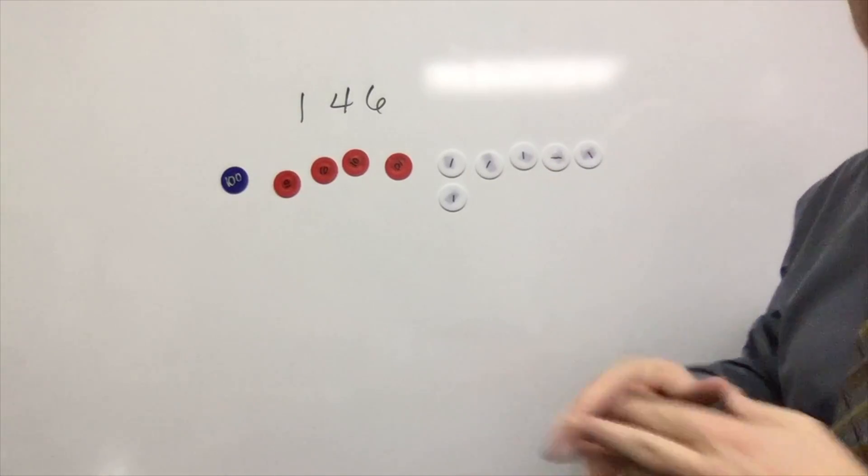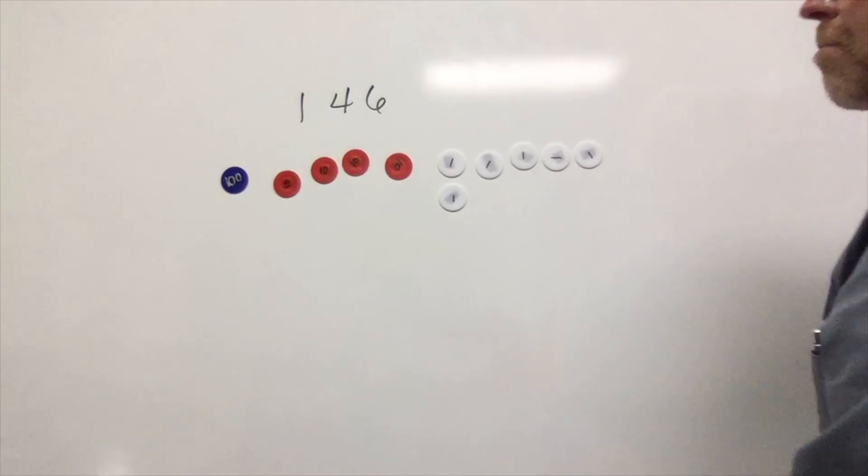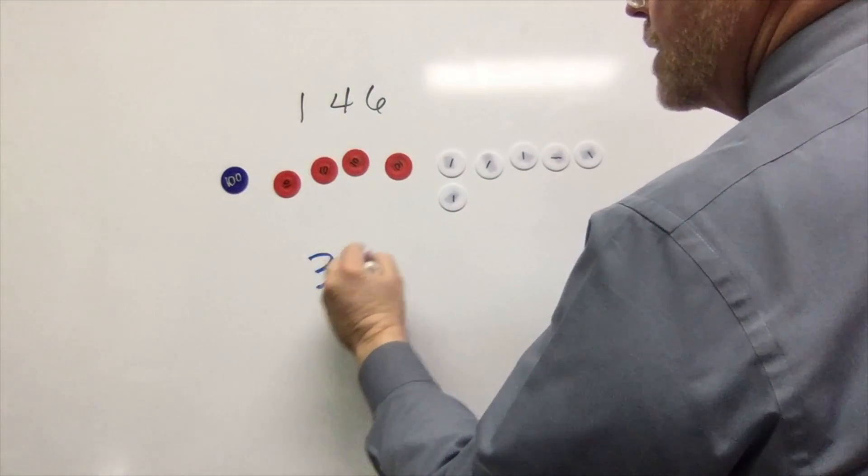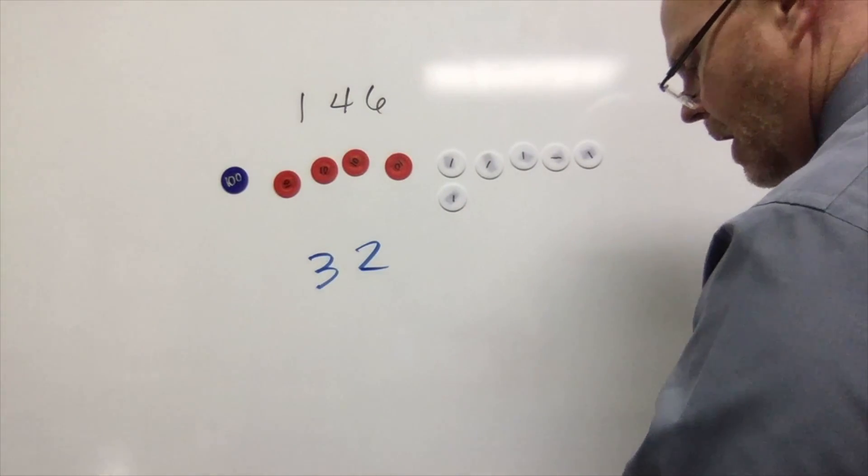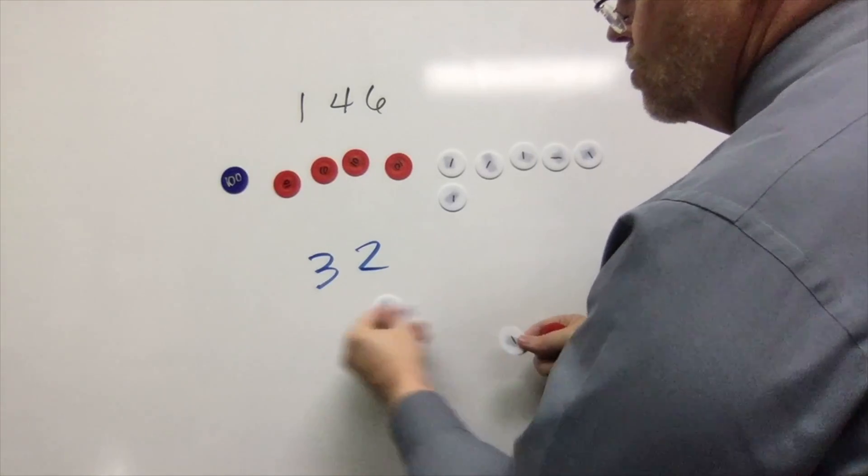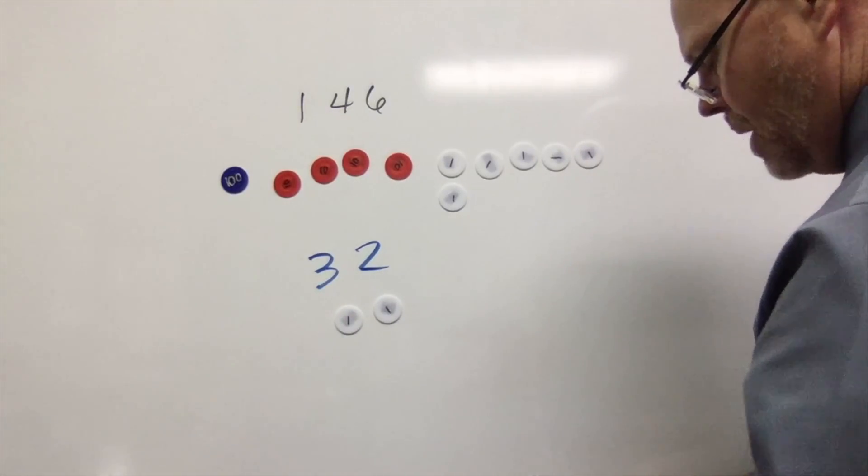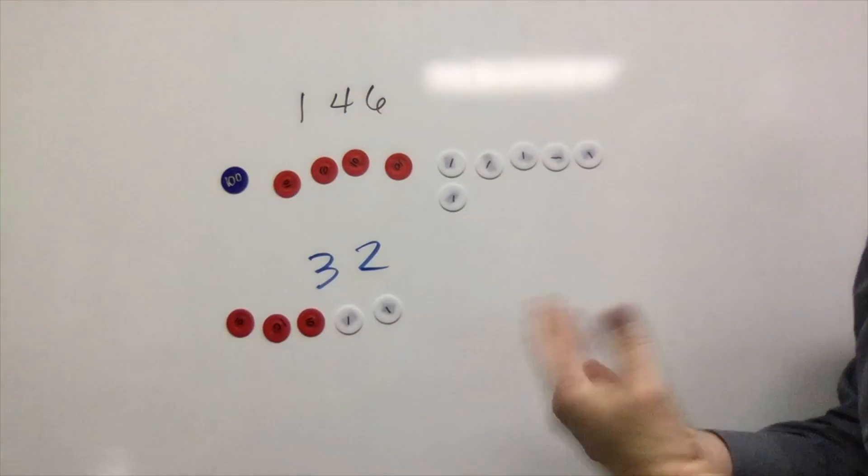I can give a student a number and they can build it. If I were to say I want 32, I would want kids to say, 'Okay, I know I'm going to have two ones and three tens'—so that's 32.